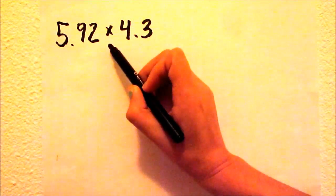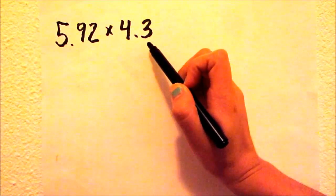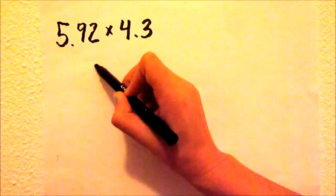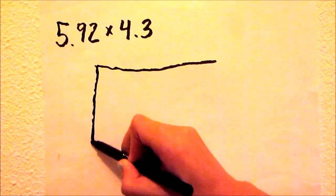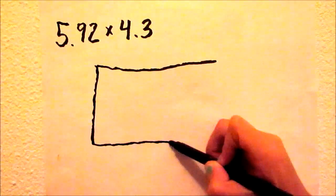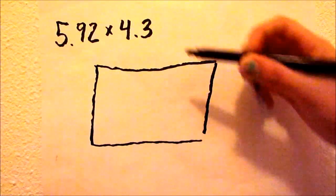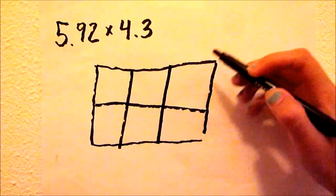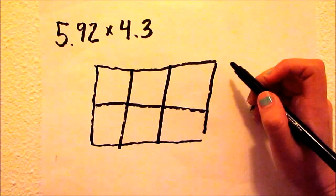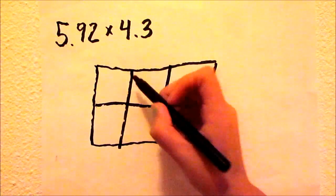To multiply 5.92 times 4.3, we start by drawing a 3 by 2 rectangle because we have factors of 3 and 2 digits. And we divide each section diagonally to show the tenths place and the ones place.